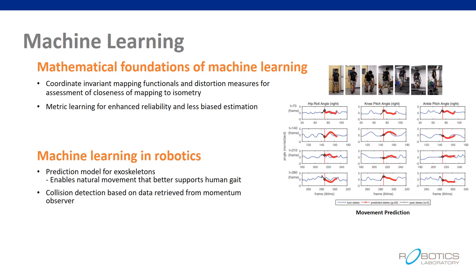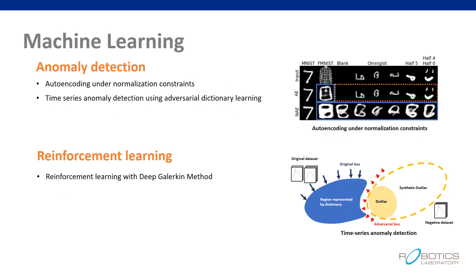Our lab also focuses on academic and practical topics regarding machine learning. First of all, we develop mathematical foundations of machine learning, such as mathematical characteristics of the distribution of datasets. We also look into possible applications of machine learning to robotics — for example, we devise prediction models for human exoskeletons and robot collision detection. We also study reinforcement learning based on the method of solving partial differential equations.